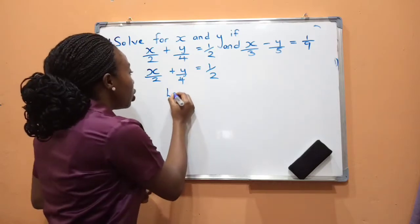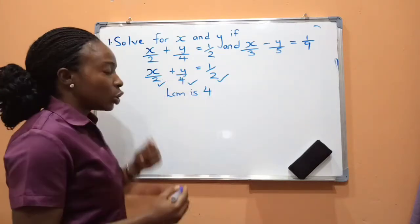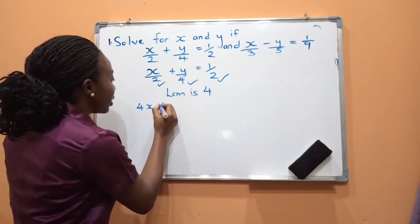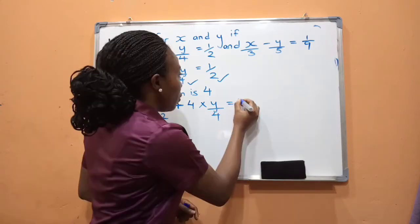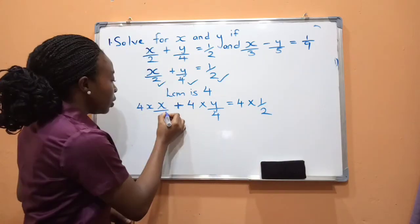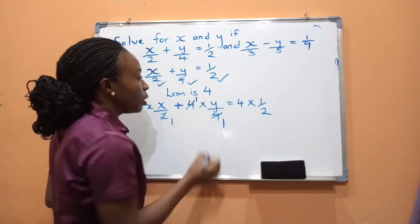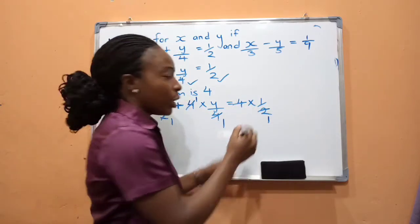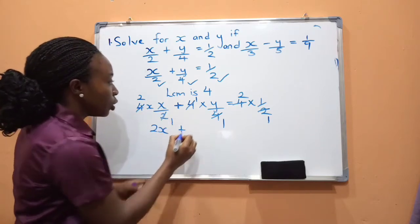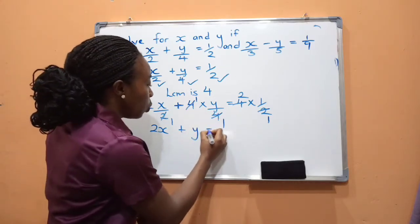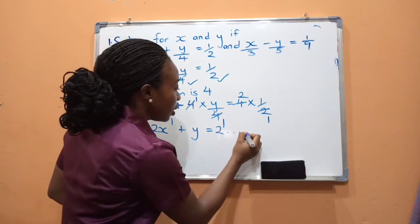Now that we've found the LCM, the next step is to multiply each term by it. So we have 4 × (x/2) + 4 × (y/4) = 4 × (1/2). Simplifying: 4÷2 = 2, 4÷4 = 1, 4÷2 = 2. This gives us 2x + y = 2. We have successfully eliminated the fractions.